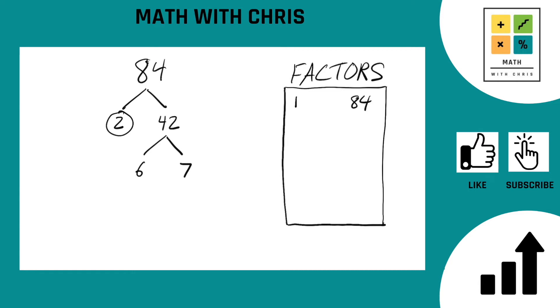Alright, let's take a look at the 6. Can 6 be broken down further? Indeed it can. 6 is of course 2 times 3. And both 2 and 3 are prime numbers, circle them, they're done.